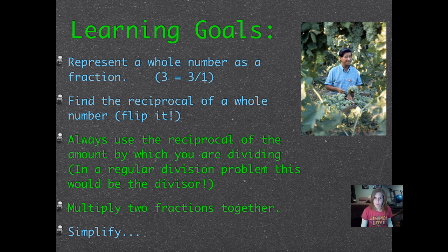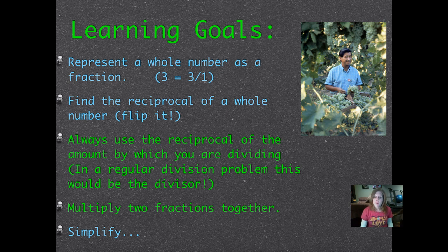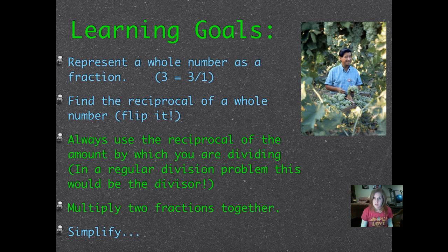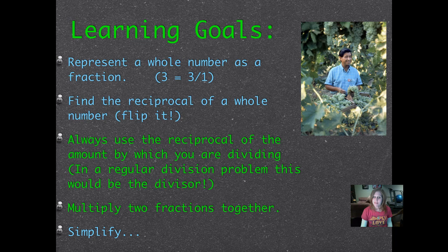Find the reciprocal of a whole number, which means to flip the numerator and denominator. Always use the reciprocal of the amount by which you are dividing - in a regular division problem, we would consider this to be the divisor. Multiply two fractions together and simplify.